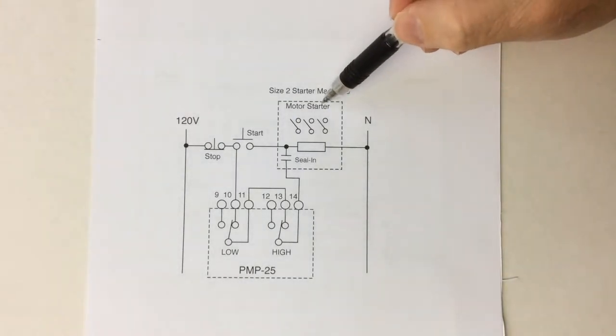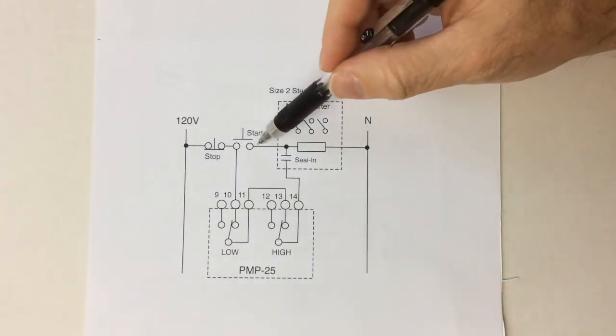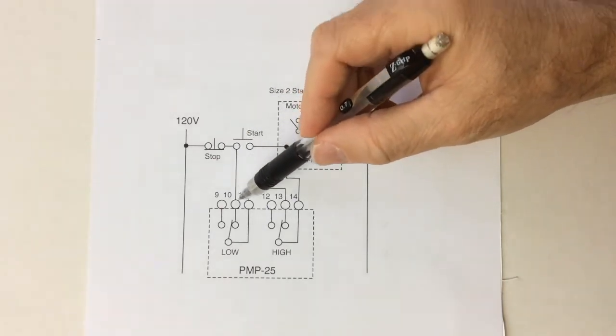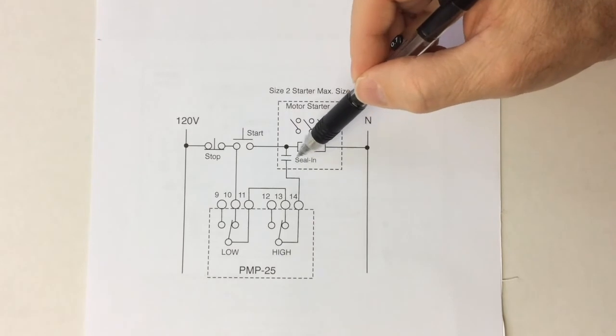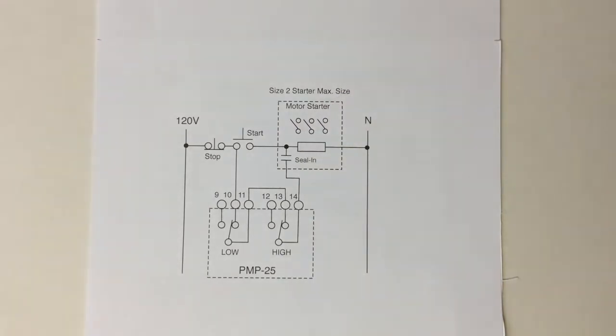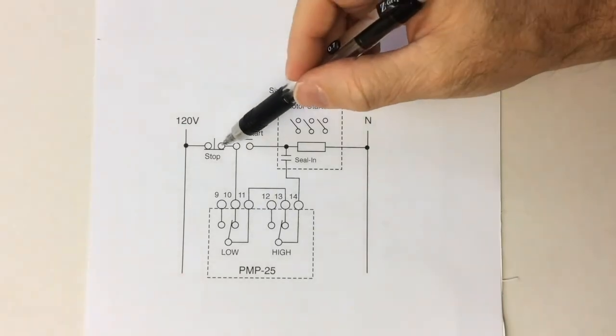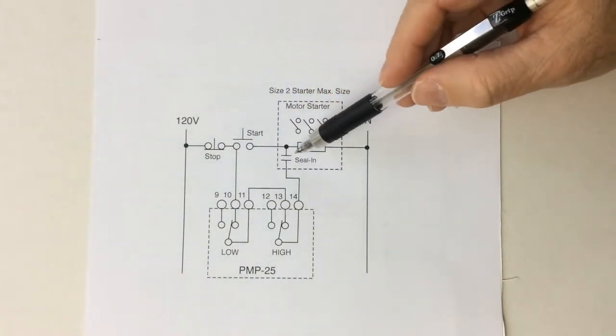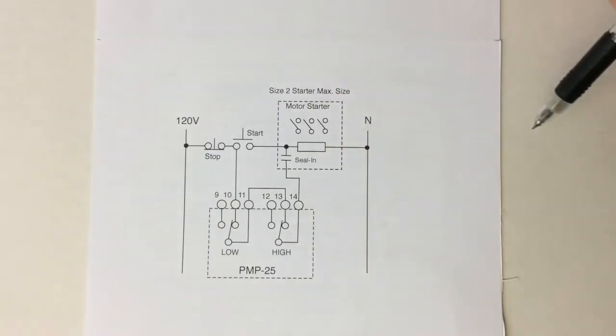After the start button is closed and the motor starts, the starting coil is held on by the stop button, the PMP25 contacts, and the sealant contact. If the stop button or either of the PMP25 contacts open, the starting coil will de-energize and open the sealant contact. The motor will shut down and wait for a start.